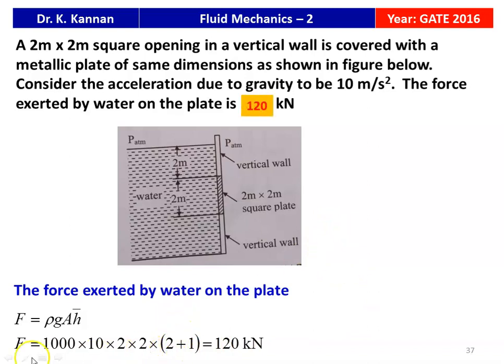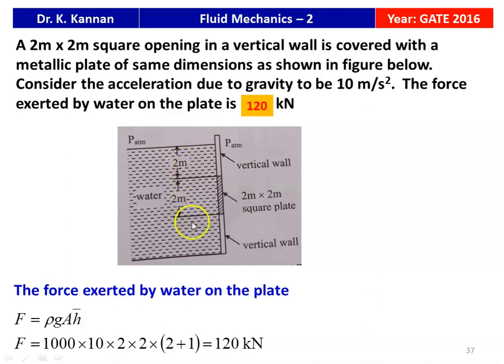H̄ equals half the height of the plate plus the height from the gate to the free surface: 1 plus 2 equals 3 meters. Therefore the force is 120 kilo Newton.